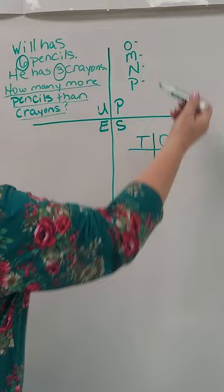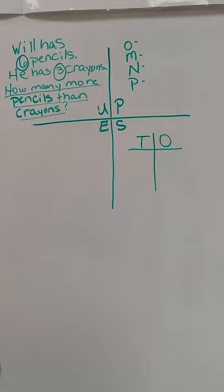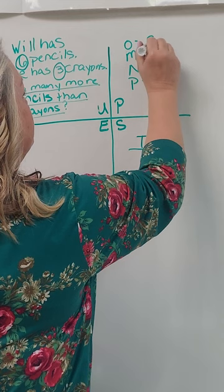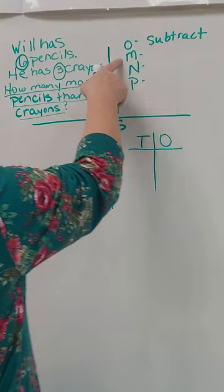So over here we have O stands for operation. So what operation are we going to do? When we say how many more, that means we're going to subtract. So I'm going to write the word subtract. Okay, this is our method that we're going to use, and our method is going to be subtract.